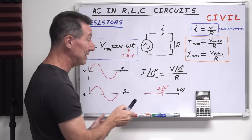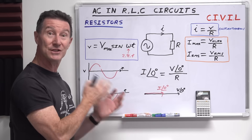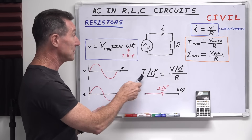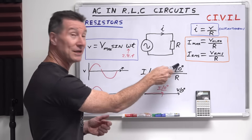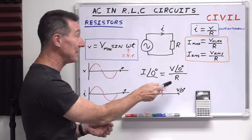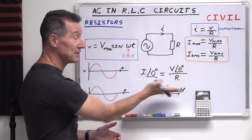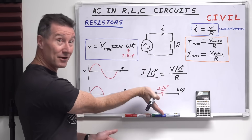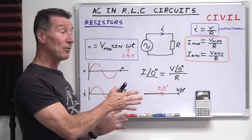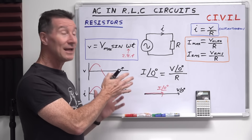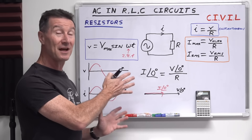In the case of a resistor, the phasor representation is simply zero degrees, because the resistor is completely linear and doesn't impact the phase at all. Our phasor diagram is just this: the current at zero degrees phase angle equals the voltage at zero degrees phase angle divided by the resistance. It's at zero degrees — not 90, not anywhere else. So very simple and rather trivial, but you must understand you're dealing with AC now.